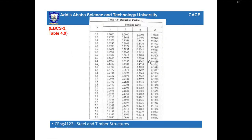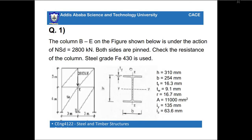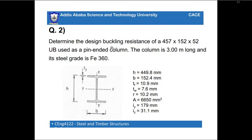Once we have the buckling curve and the lambda value, we take the value of the reduction factor χ from the table according to the numbers obtained. In the next video, I will work through two examples: the first is checking the resistance of a column, and the second is designing the buckling resistance of a universal beam. Thank you for watching — please like and subscribe for more videos.